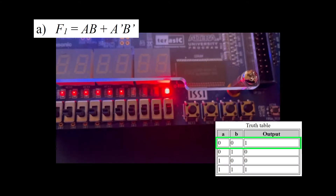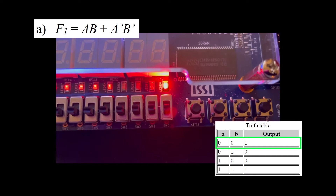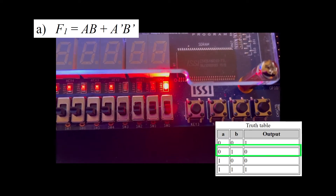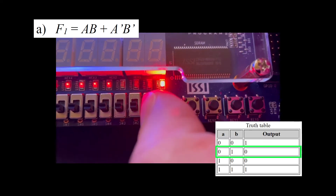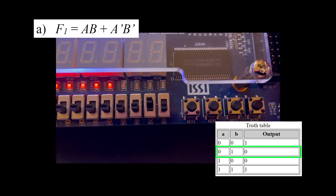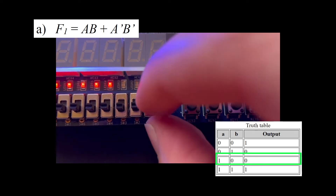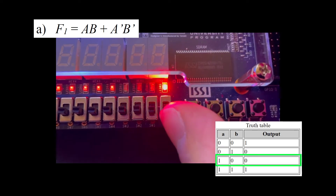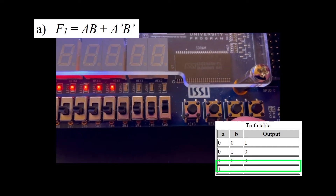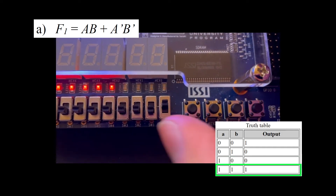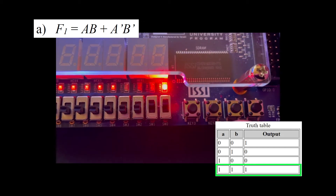When A is 0 and B is 0, F1 is 1. When A is 0 and B is 1, F1 is 0. When A is 1 and B is 0, F1 is 0. When A is 1 and B is 1, F1 is 1.